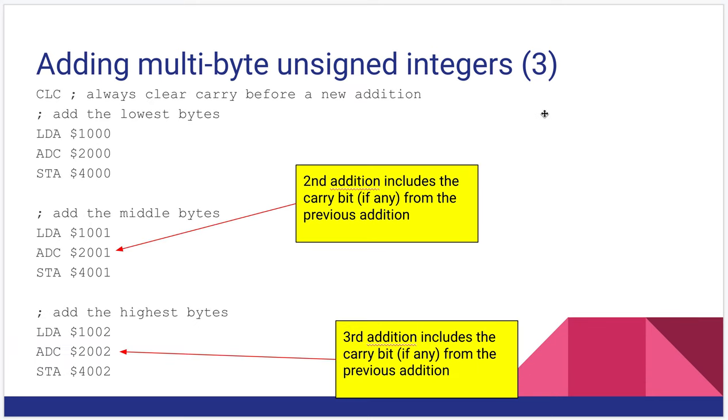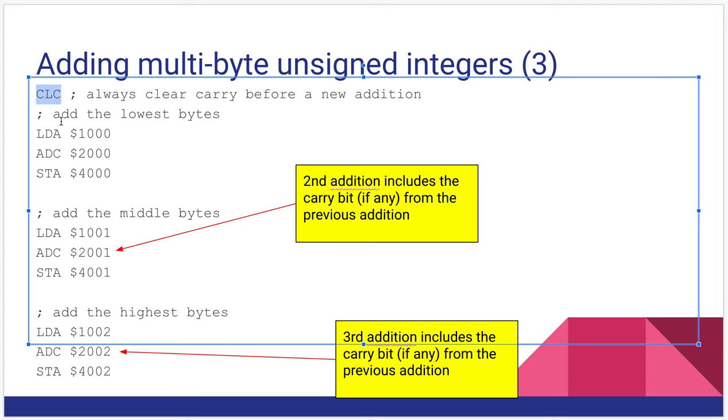And this is what it would look like in code. We have three bytes to add together for our two integers. We start the process by clearing the carry. Then we add the lowest bytes together. So we load in at $1000, we add what's in $2000, we store it at $4000. Very straightforward. But note that's going to potentially generate a carry bit in the program status register. We're not going to clear that yet so that it carries on to the middle bytes. So we load in what's at $1001, we add what's in $2001, and we store that to $4001. That addition will bring in the carry from the previous stage if there is one.